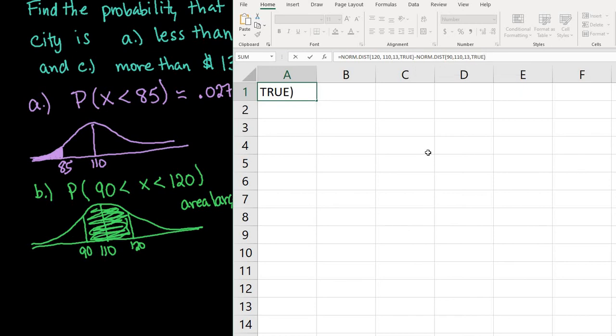When I hit enter, it gives the total area. I already rounded to four decimal places, which is the default. If you need more or less, you can adjust that by highlighting the cell, but four is the default.